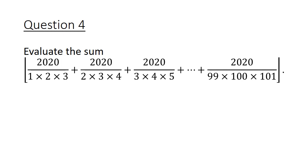In question 4, we evaluate a sum inside a floor function — meaning we round the final answer down. Inside the floor function, we have 2020 divided by 1×2×3, plus 2020 divided by 2×3×4, and so on until the last term 2020 divided by 99×100×101. Pause the video and give this a good try.